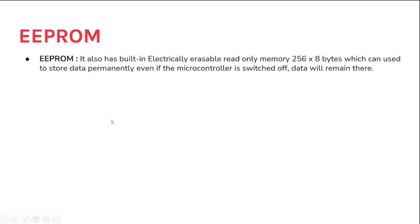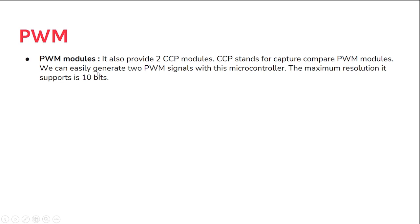It also has a built-in EEPROM — an electrically erasable read-only memory — which stores data permanently even when the microcontroller is switched off. It supports pulse width modulation, especially for motor control, to produce a varying duty cycle. It provides two CCP modules (capture, compare, and PWM). You can easily generate two PWM signals with this microcontroller. The maximum PWM resolution is 10 bits.